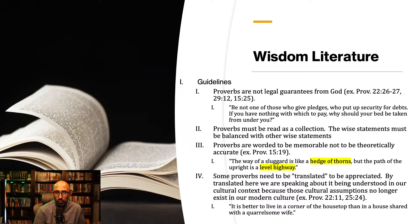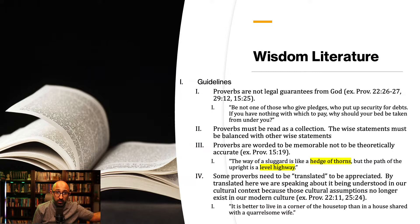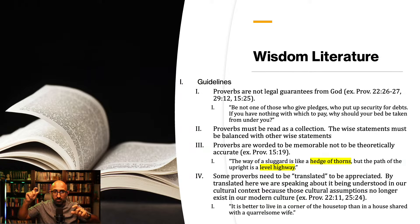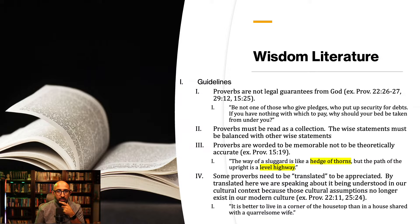'The way of a sluggard is like a hedge of thorns, but the path of the upright is a level highway.' Notice the contrast: hedge of thorns versus level highway — you'd obviously prefer the highway. The comparison is between the lazy sluggard and the upright individual. This is memorable because of contrast and parallelism. You can revisit the poetry lesson for more on recognizing parallels. Some proverbs also use a numerical staircase structure — we'll see an example shortly.